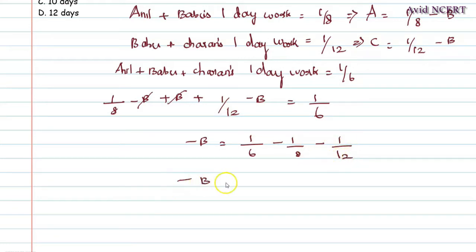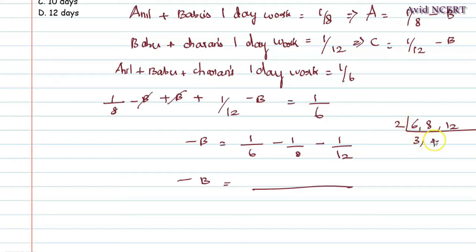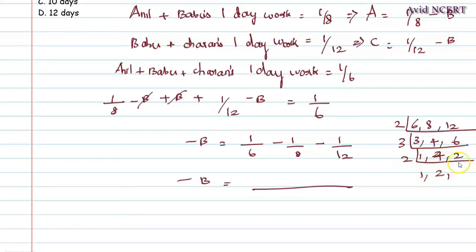Simplifying: minus B equals 1/6 minus 1/8 minus 1/12. The LCM of 6, 8 and 12 is calculated: 2 divides 6 to 3, 8 to 4, 12 to 6; again 2 divides to give 3, 2, 3; continuing, the LCM works out to 2 × 2 × 3 = 12, and 12 × 2 = 24.